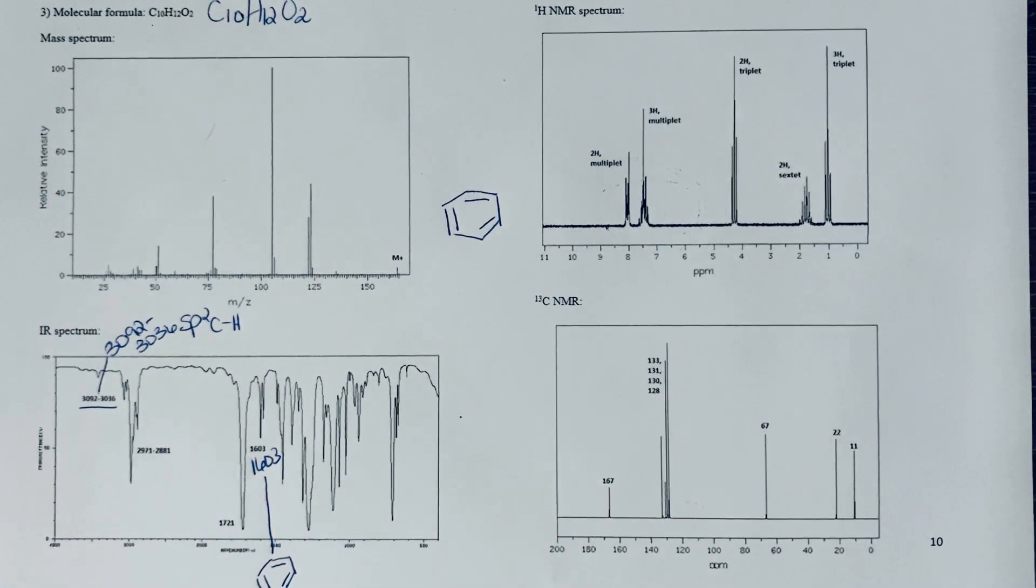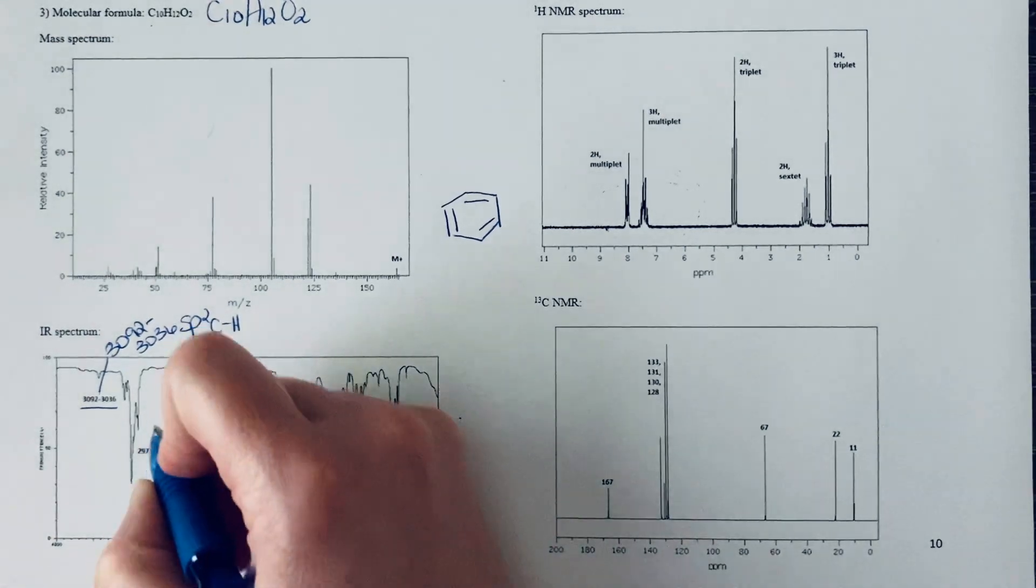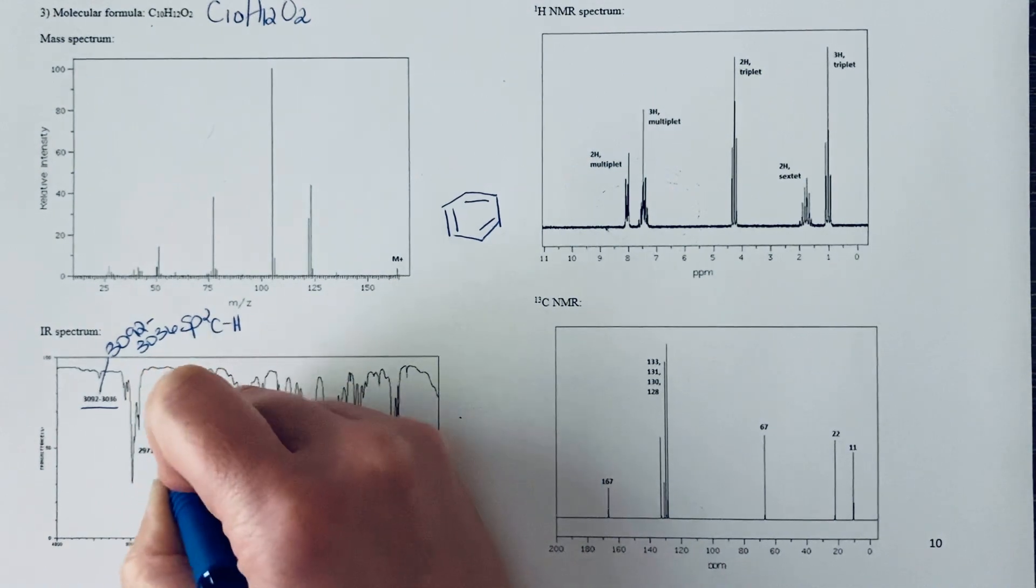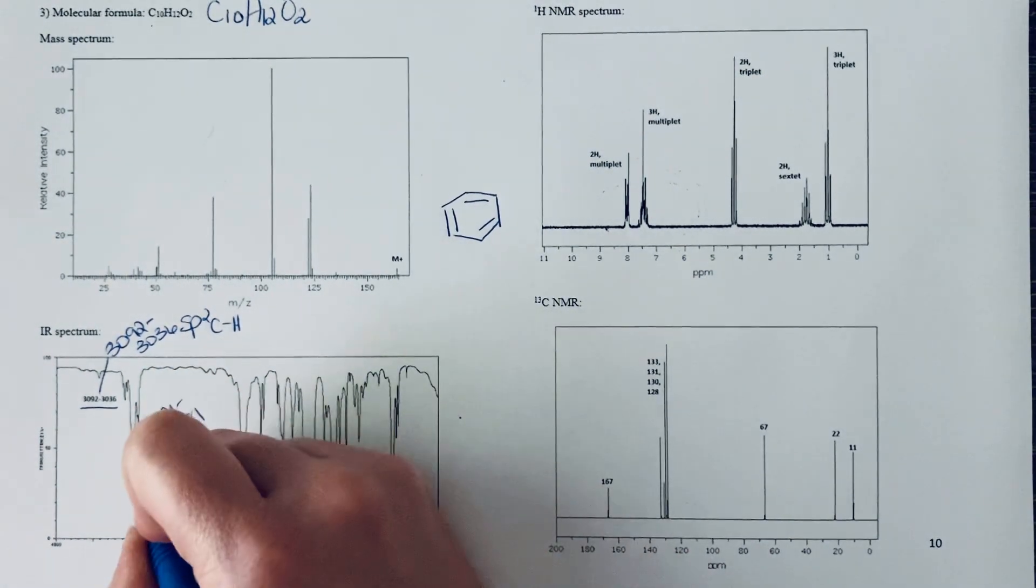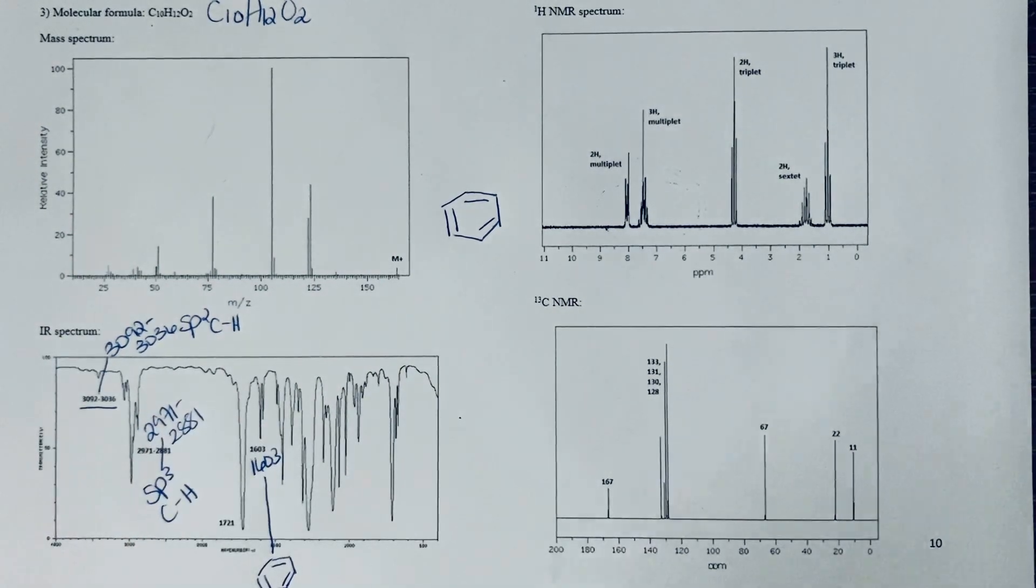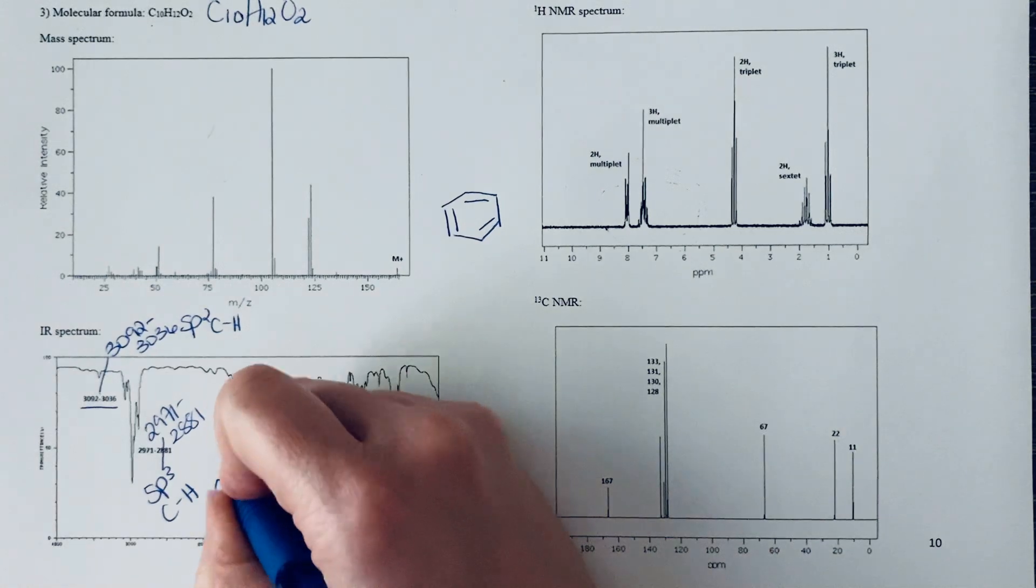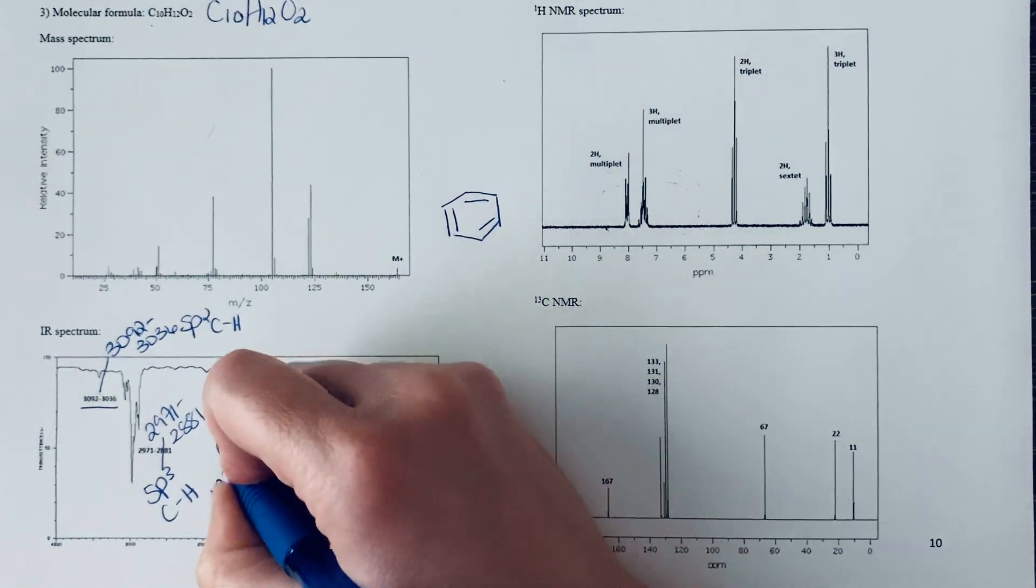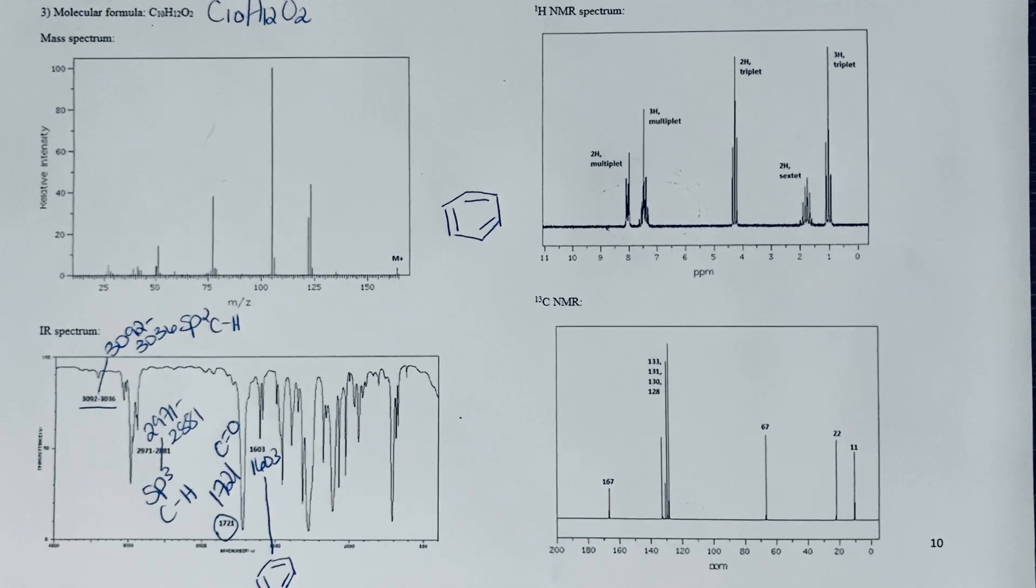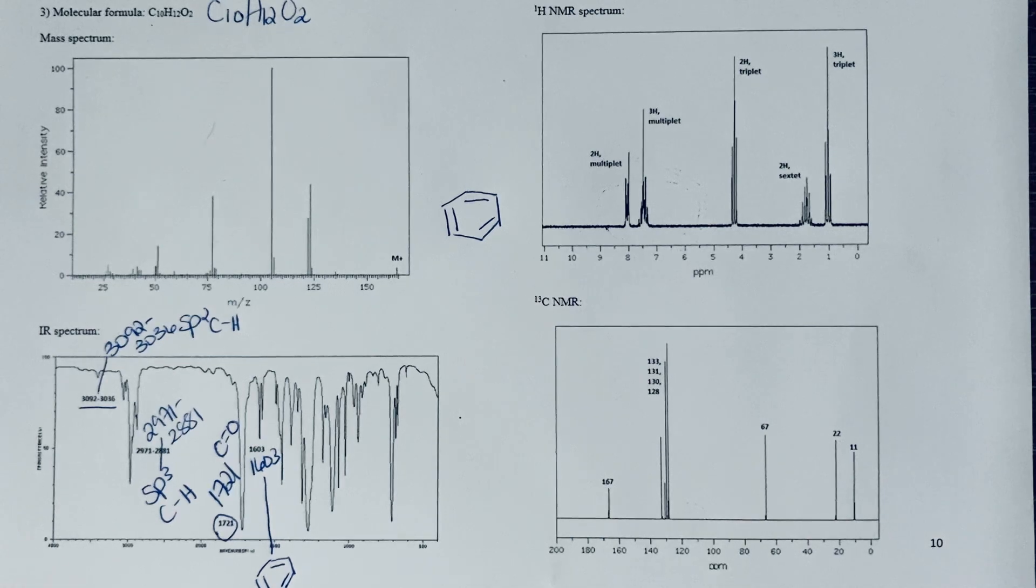Other information we can get from the infrared spectrum: we've also got some other CH stretches at 2971 to 2881, so that looks like some alkanes, some sp3 carbon hydrogens. Then we also see that we have at 1721 a carbonyl. This 1721 value is kind of an ambiguous carbonyl because it's in the range where we might see an aldehyde, an ester, a ketone.